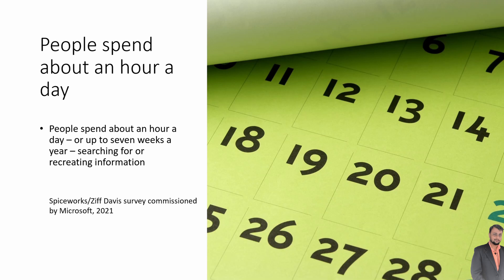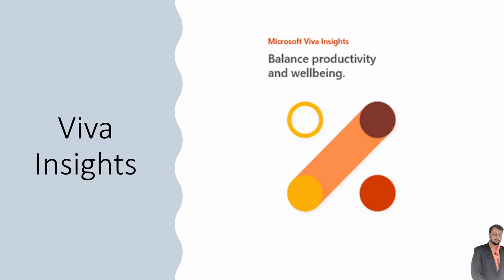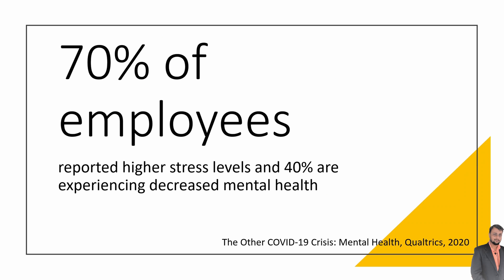The second important product is Viva Insights, which comes up with balanced productivity and well-being. 70% of employees reported higher stress levels and 40% experienced decreased mental health during the pandemic. Viva Insights comes up with a solution for employee well-being, providing useful insights for individuals, managers, and leaders to improve their productivity.